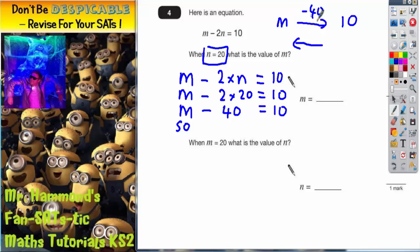The opposite of take away 40 going this way is to add 40 and go the opposite way. So 10 add 40 is 50. That tells us that the mystery number m is worth 50.